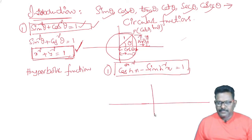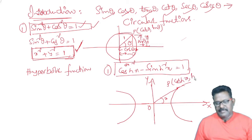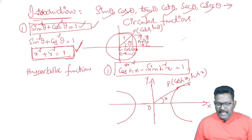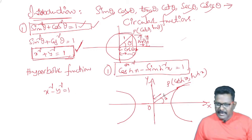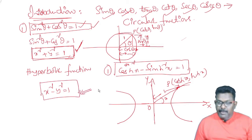A hyperbola looks like this. The equation of the unit hyperbola is x squared minus y squared equals 1, just as the unit circle has x squared plus y squared equals 1. This is the equation of a hyperbola.